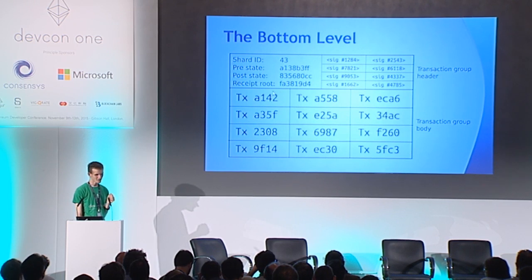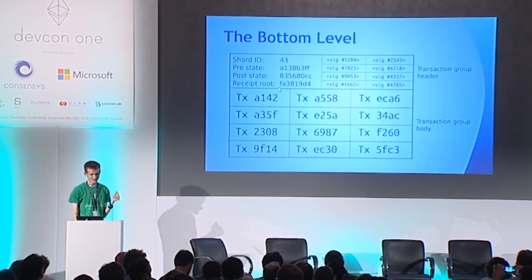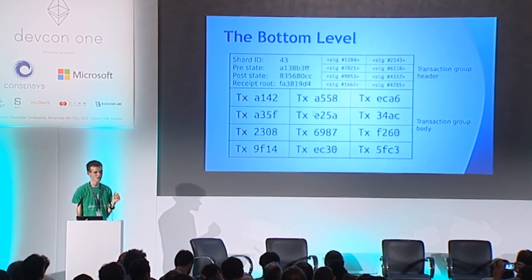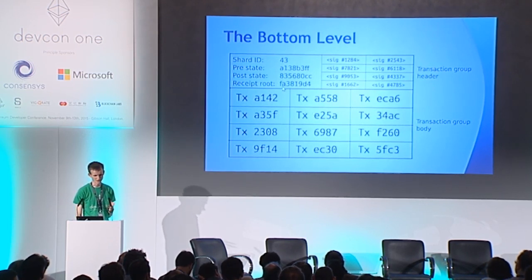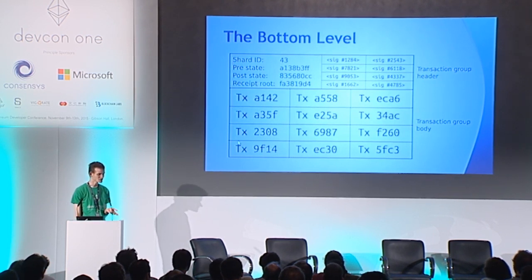Because Ethereum has this concept of receipts: if you apply all of these transactions, the root of the tree of receipts that they're going to emit is going to be this. Each of these transactions also has to have a shard ID — all transactions are going to have shard ID 43, and so the whole group has shard ID 43.